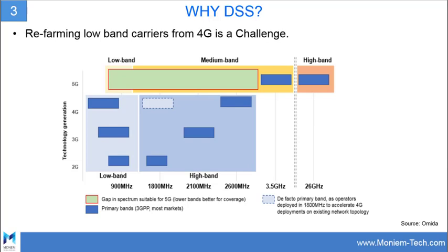Due to challenges with small cell acquisition, the ability to load existing tower infrastructure with 5G equipment, and managing customer experience with spotty 5G coverage, mobile network operators will look to refarm existing low-band spectrum like 700 MHz, 900 MHz, and 1.8 GHz. However, the challenge here is that 3G and 4G services are currently deployed in that spectrum.